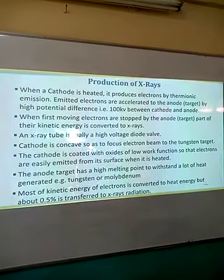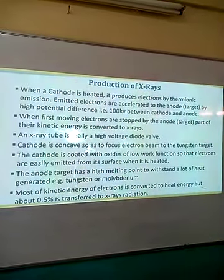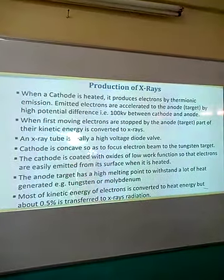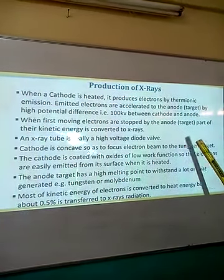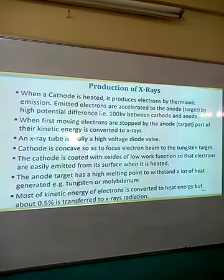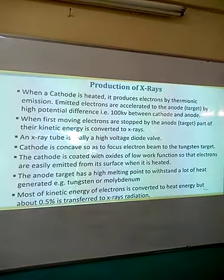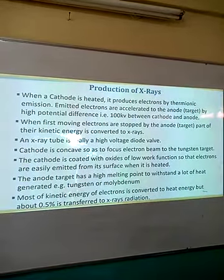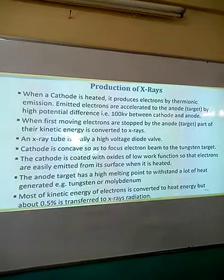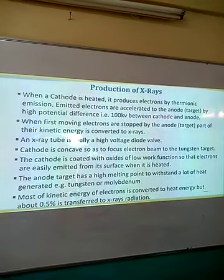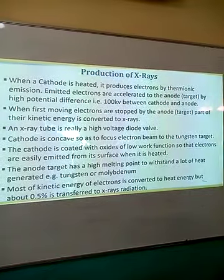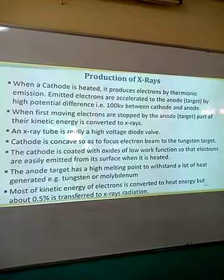The X-ray tube operates at a very high voltage. This enables the production of electrons at the cathode. The cathode is concave in shape, which is meant to focus the electrons to the target. The cathode is coated with oxides of low work function. The purpose of that is to enable the emission of electrons from the surface of the heated cathode. The anode target has a high melting point, to withstand the large amount of heat generated at the point of impact. Examples of target materials are tungsten and molybdenum. Most of the energy of the electrons is converted into heat, but 0.5% is used to produce the X-rays.